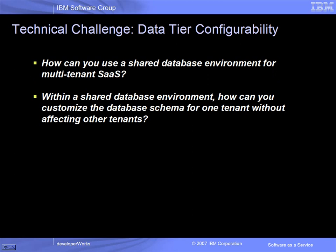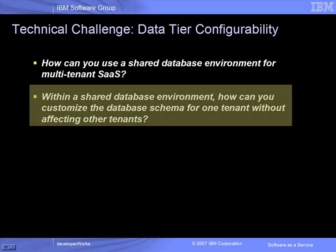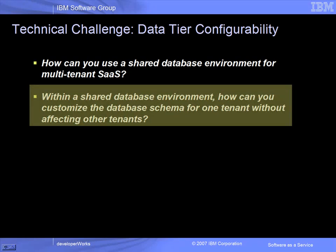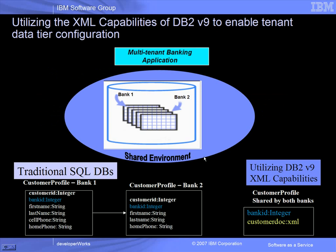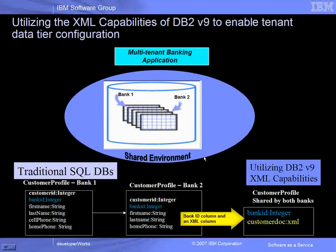When considering a data architecture in a shared environment, an important challenge a SaaS provider is faced with is how to customize a database schema for each tenant. One way to provide a very high degree of customization requiring minimal application changes is to use the pure XML capabilities provided in DB2 version 9. In the sample banking application, this scenario will show how to share database schema across two tenant banks through the use of a BankID column and an XML column in each of the database tables.